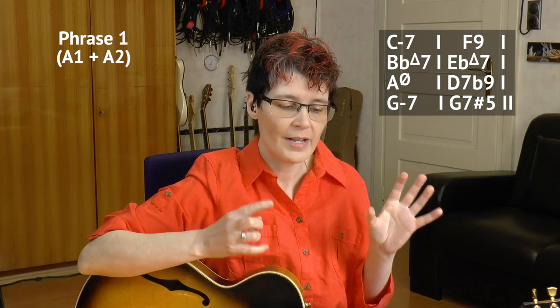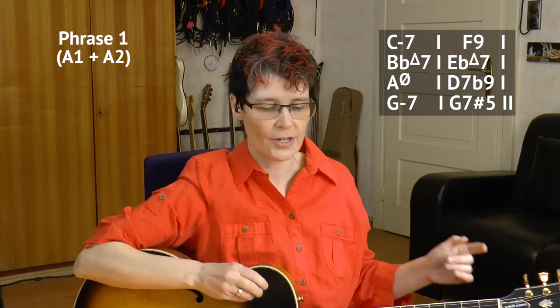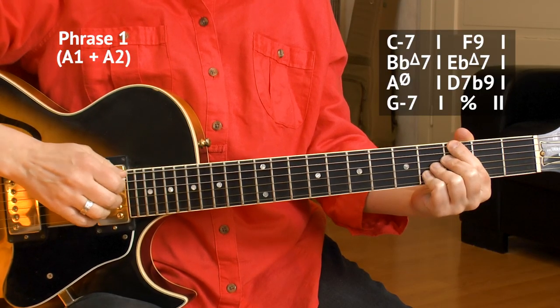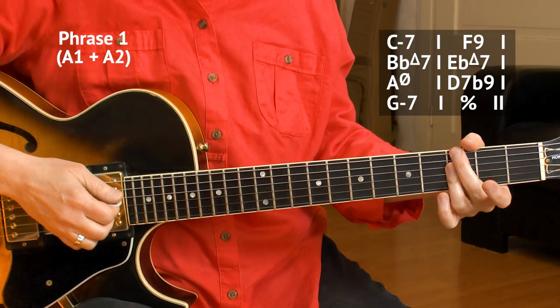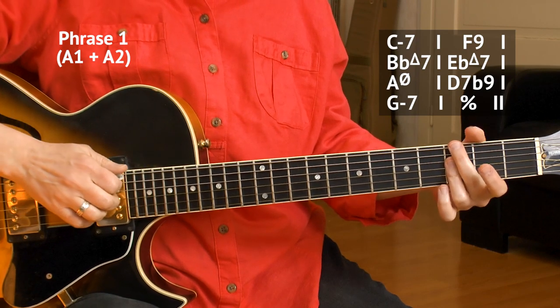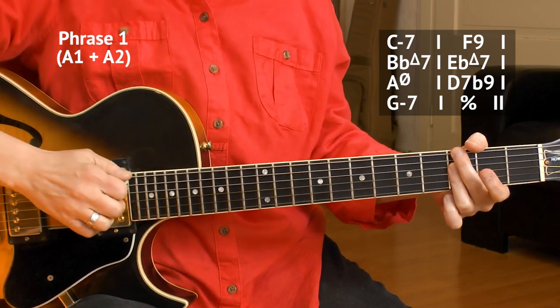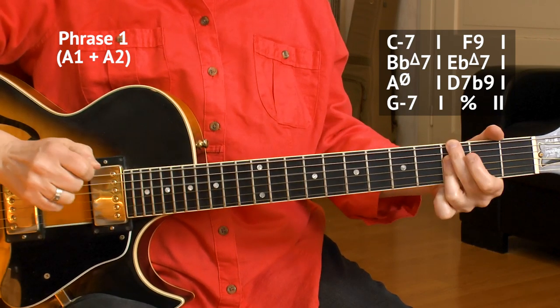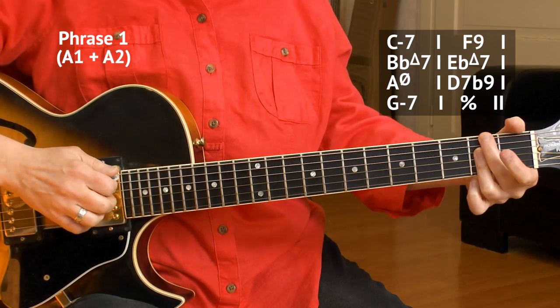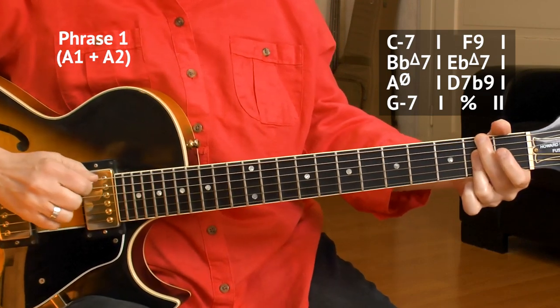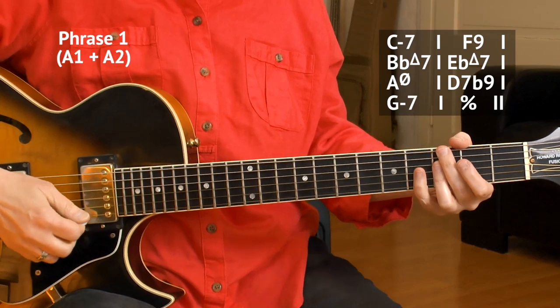And for the A2 section, you need to change the last bar. Instead of that G7 sharp 5, you play one more bar of G minor 7. But this time, because the previous one was G minor 7 already, and now I do a little break. I go G minor 7, G flat minor 7, and back to G minor 7. So, last 2 bars.